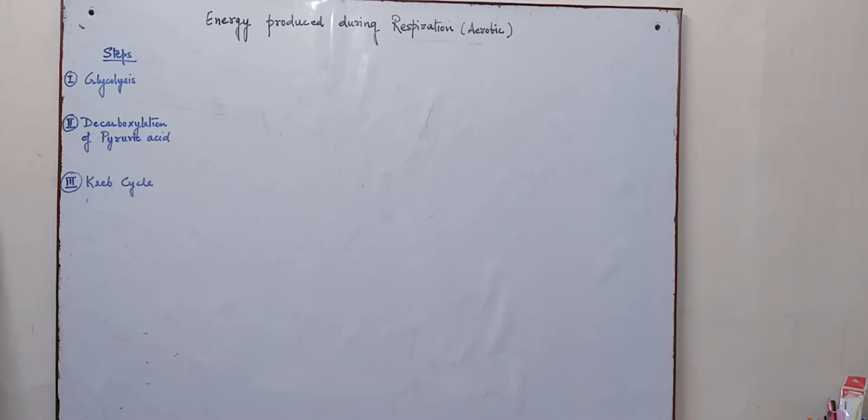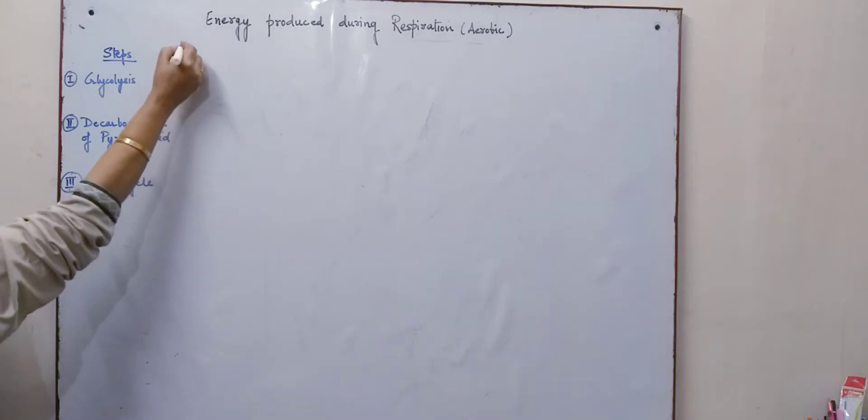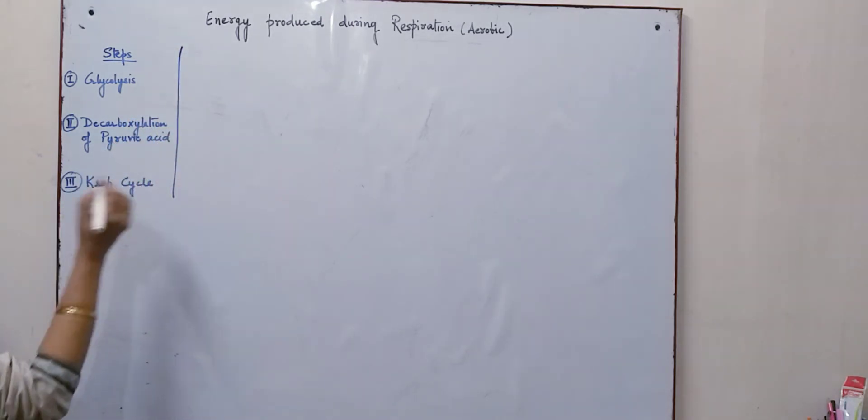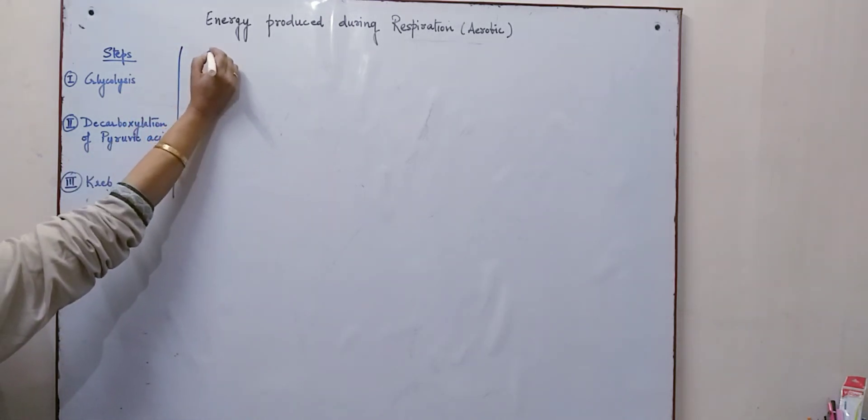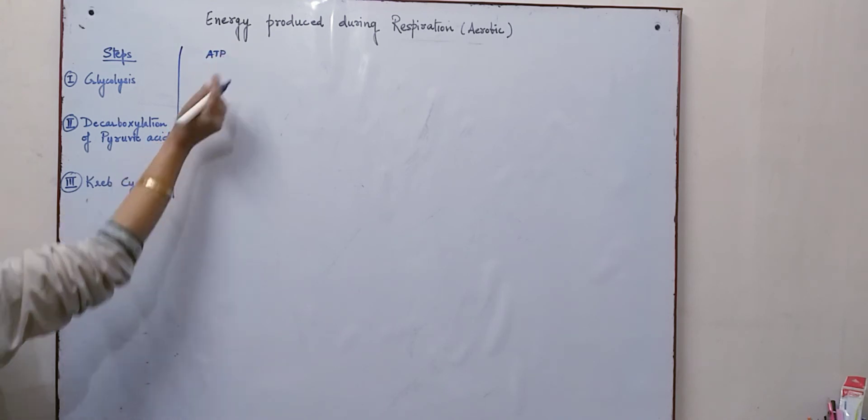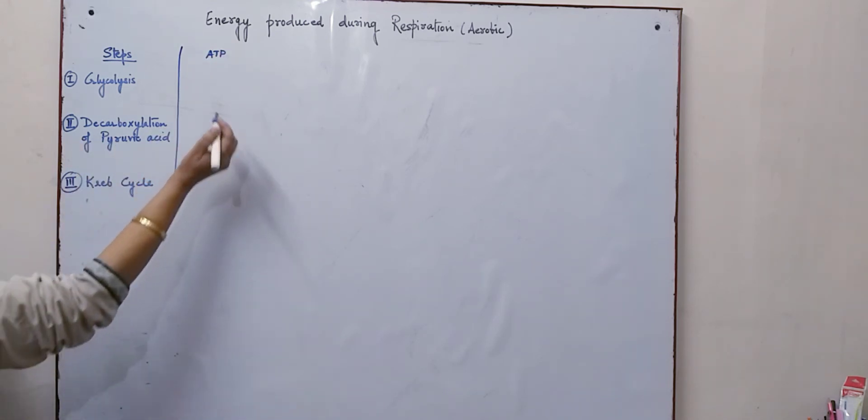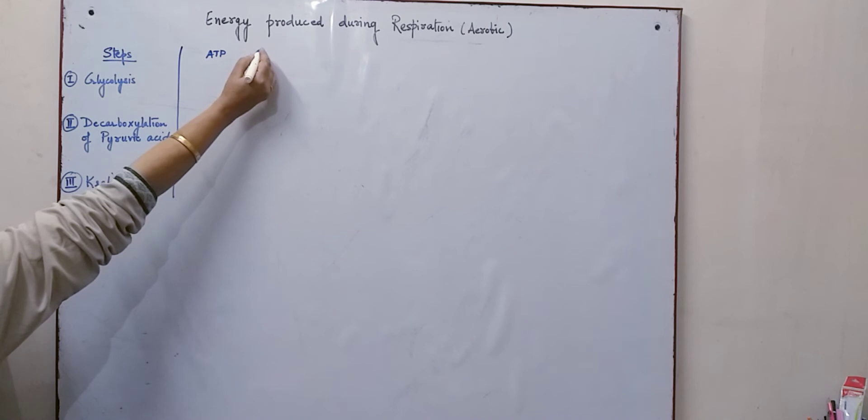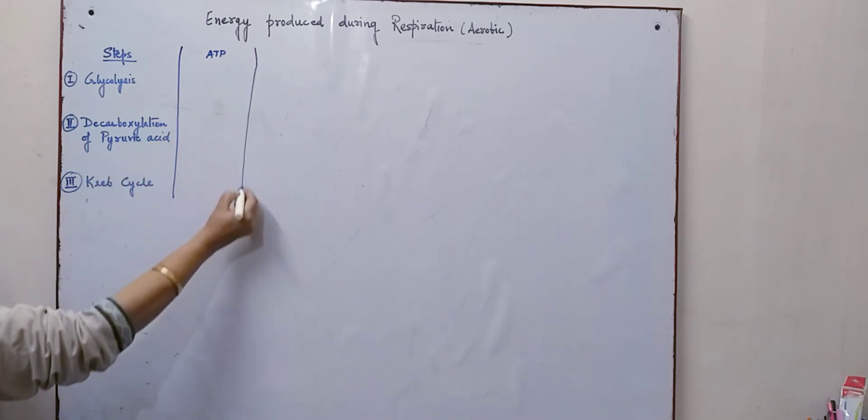So here the major steps which are producing the ATP are these three: the glycolysis, the decarboxylation of pyruvic acid and the Krebs cycle. Now here in the next step I am going to write the number of molecules of ATP which are being directly produced. Now let us talk about the glycolysis first.